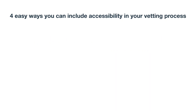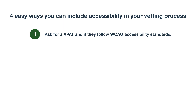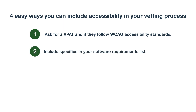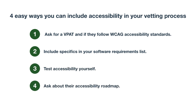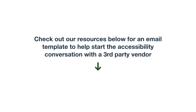In this video we'll review four easy ways you can include accessibility in your vetting process. They are: ask for a VPAT and if they follow WCAG accessibility standards, include specifics in your software requirements list, test accessibility yourself, and ask about their accessibility roadmap. Check out our resources below for an email template to help you start the accessibility conversation with a third-party vendor.